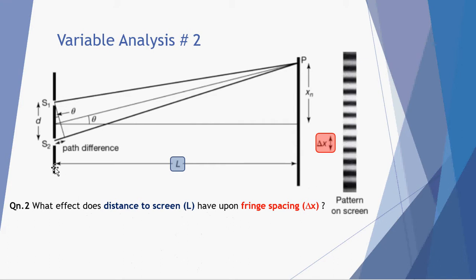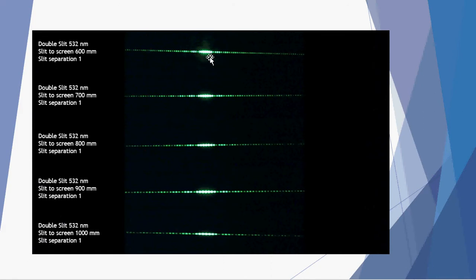Our second variable analysis is what happens when we change the length from the slit to the screen. So here's our interference patterns. Each one of these is using the same slit separation setting one on the slit that we used at the Australian synchrotron. And we've also got the same coloured wavelength, the green light of 532 nanometres. However, we're moving from 600 millimetres or 60 centimetres from the slit to the screen to 700, to 800, to 900, to 1000.